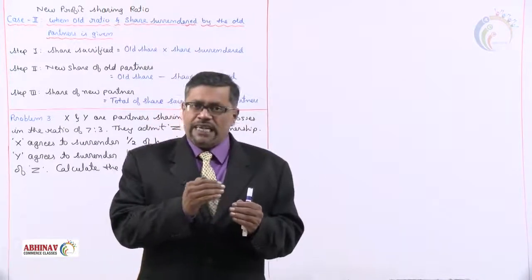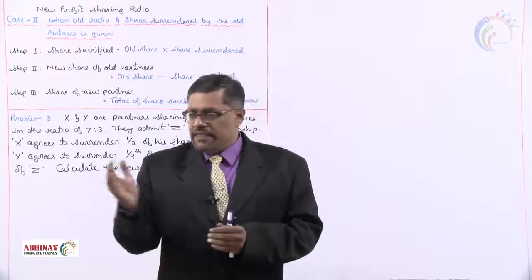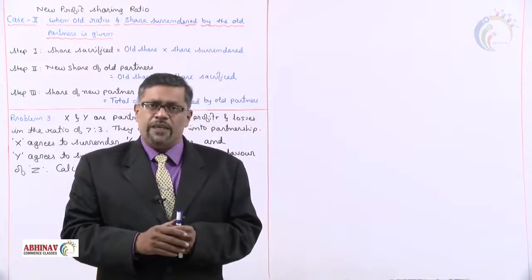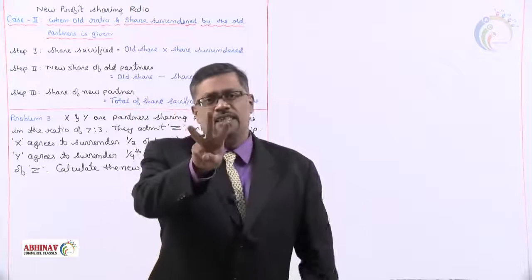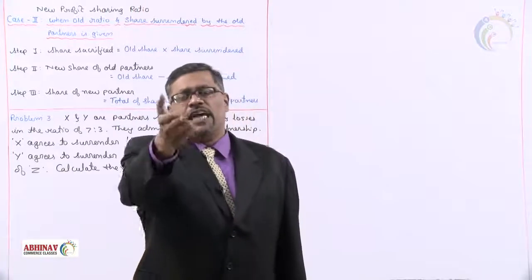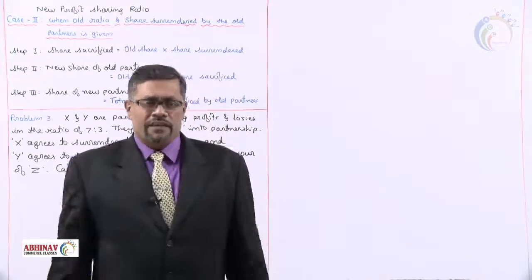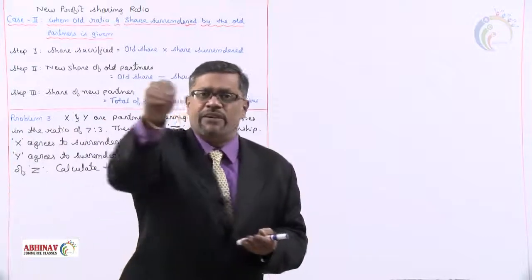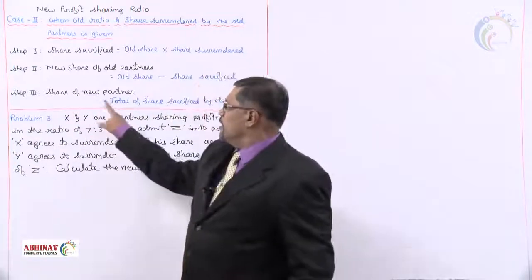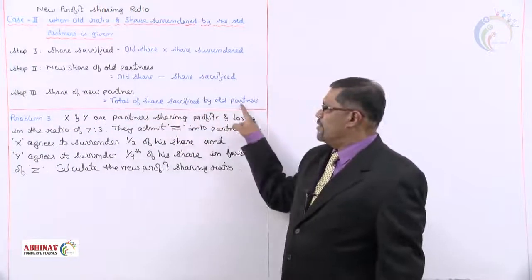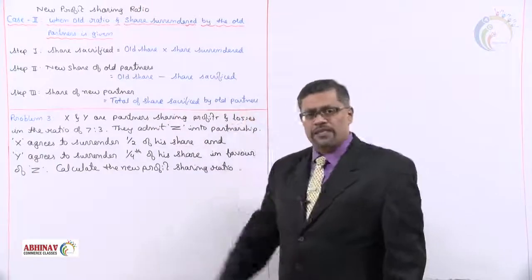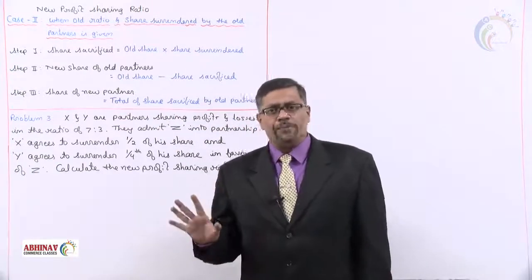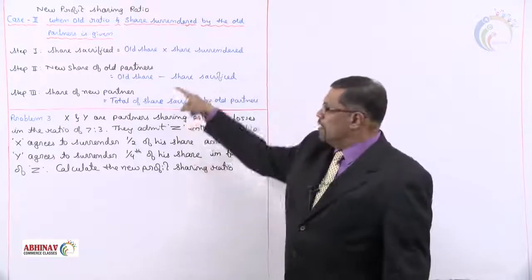If the first partner sacrifices two rupees and the next partner sacrifices one rupee, the total sacrifice done is three — that becomes the share of the new partner, because they are giving two rupees to the new partner and one rupee to the new partner. So the total of share sacrifice by the old partners becomes the share of the new partner. Let us see how to take up the problem.